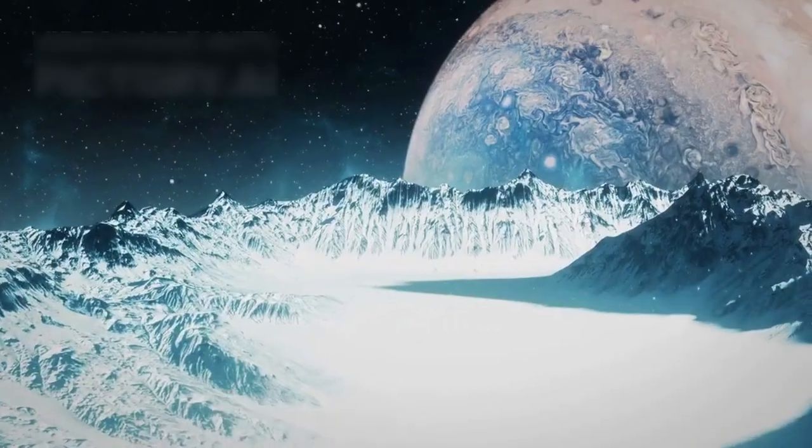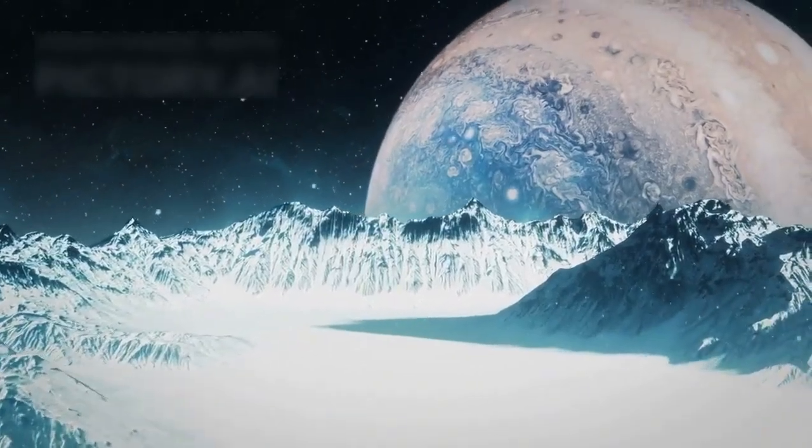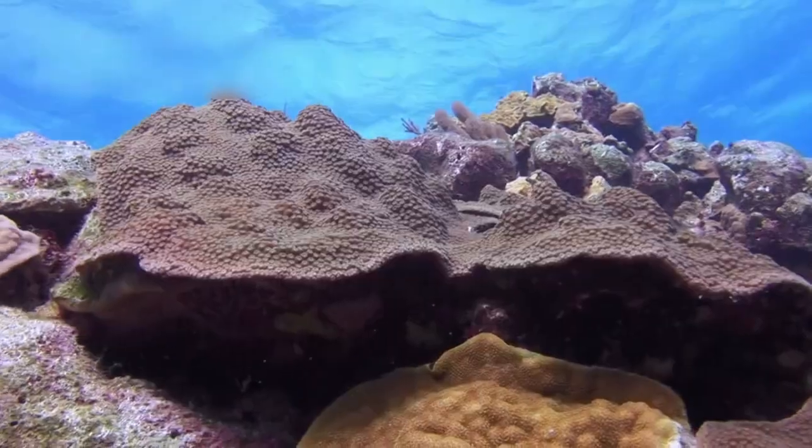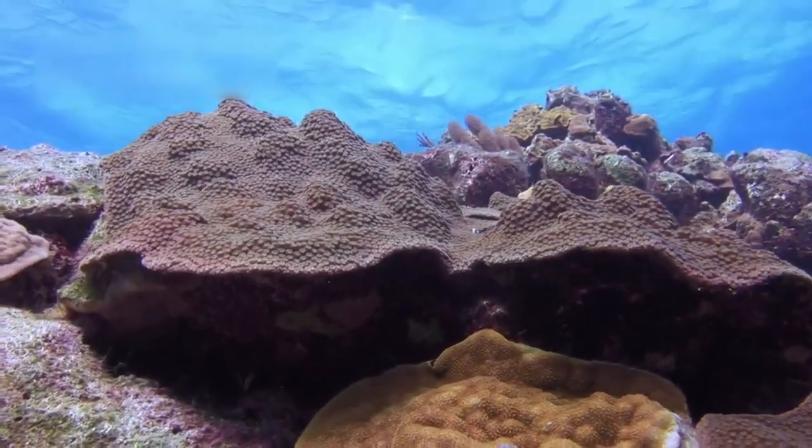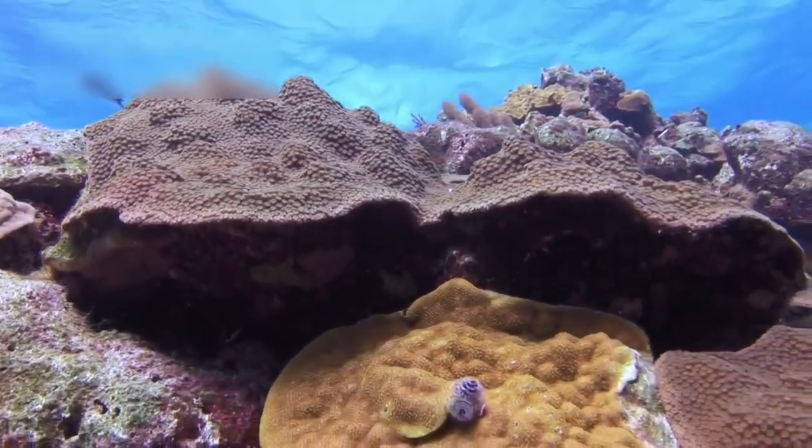Io's volcanoes made it the most volcanically active object ever found. This forced scientists to rethink how moons work beneath their icy shells. Moons like Europa and Enceladus might have subsurface oceans, offering potential habitats for life.